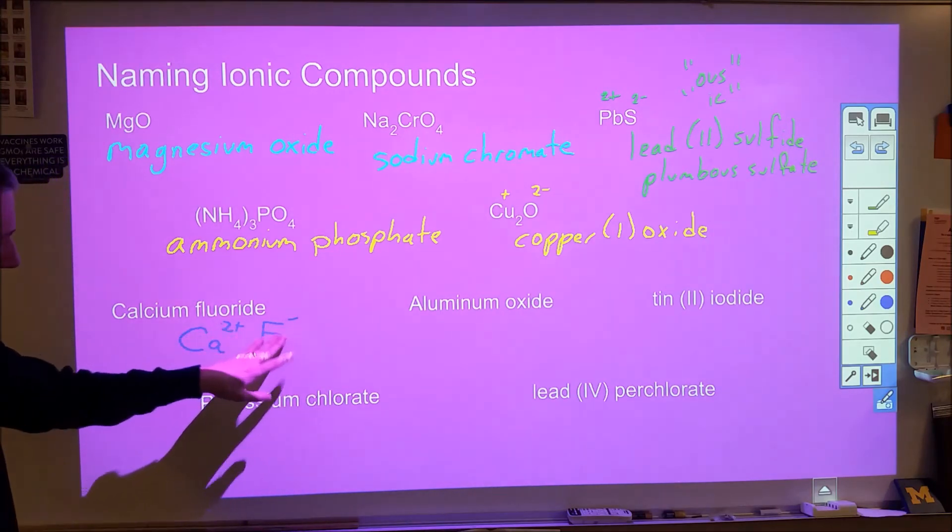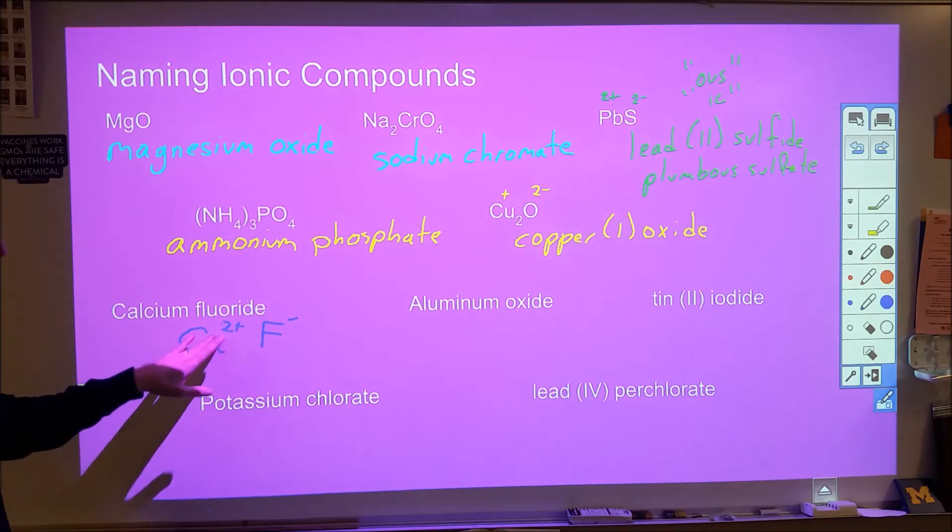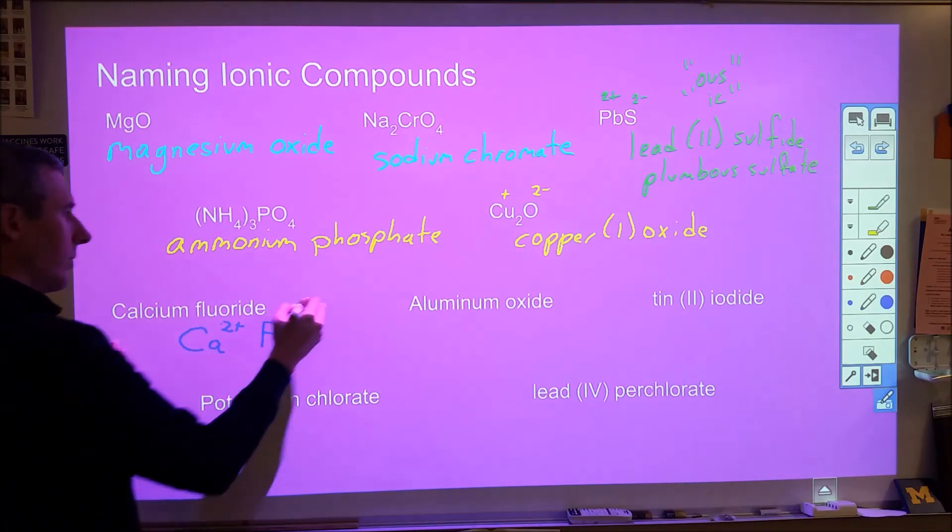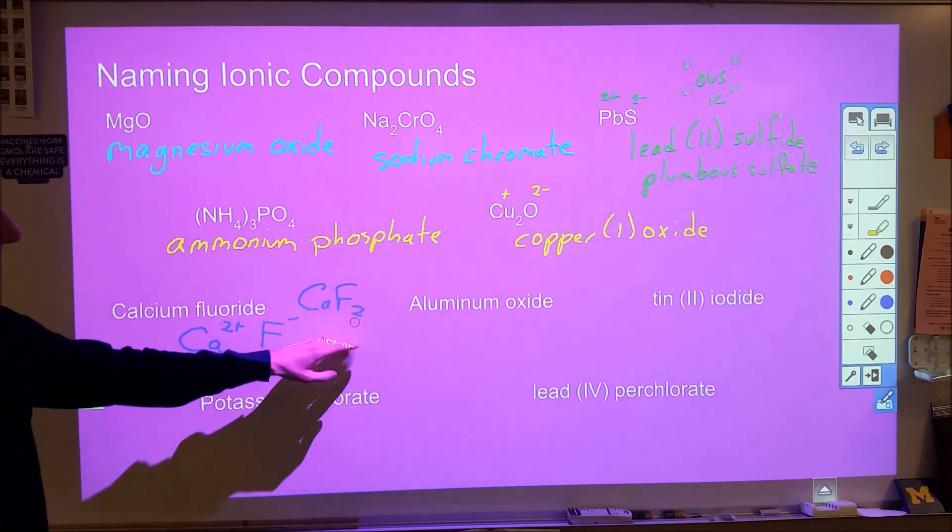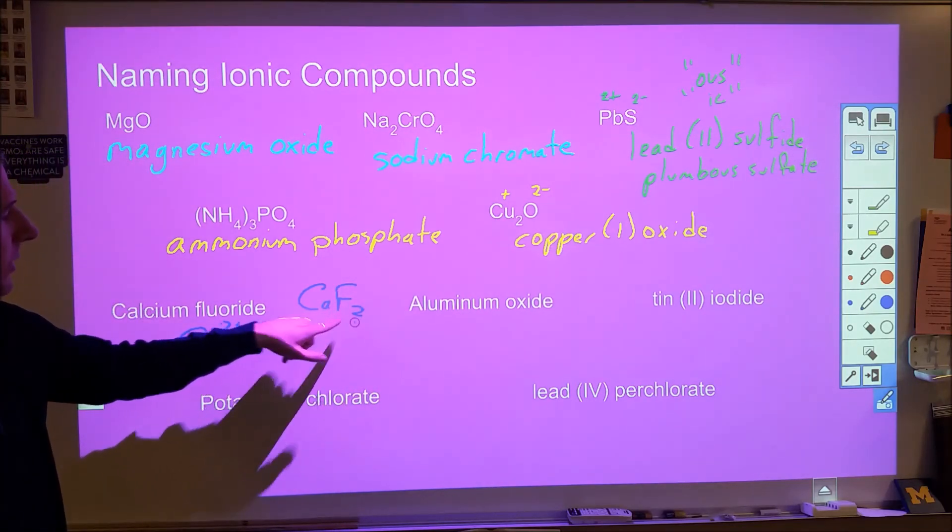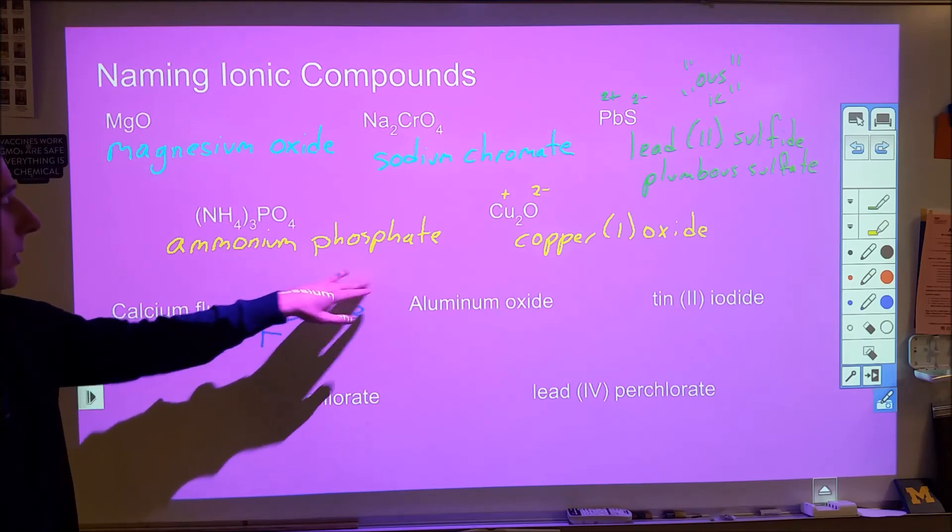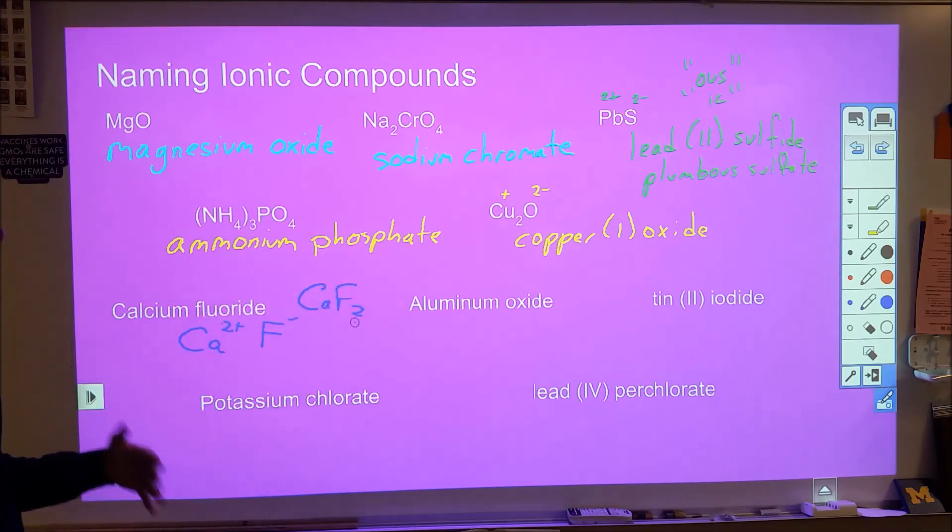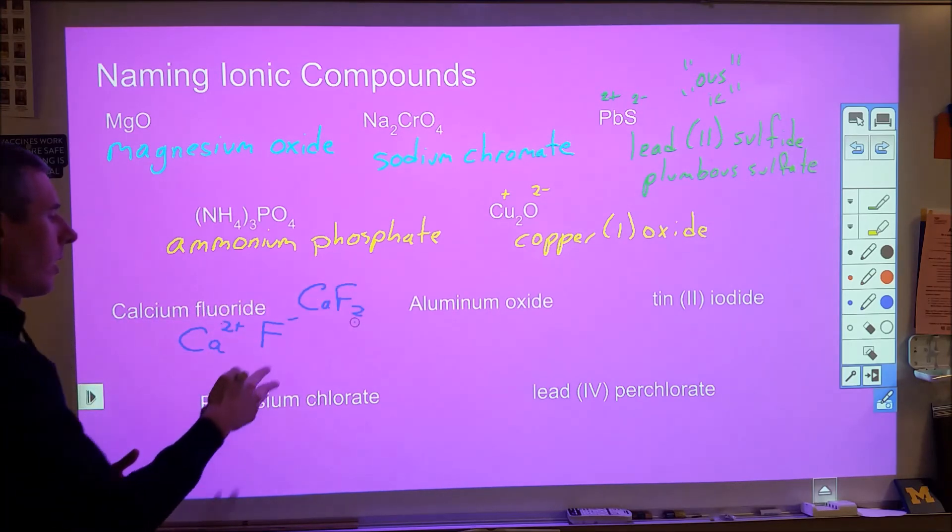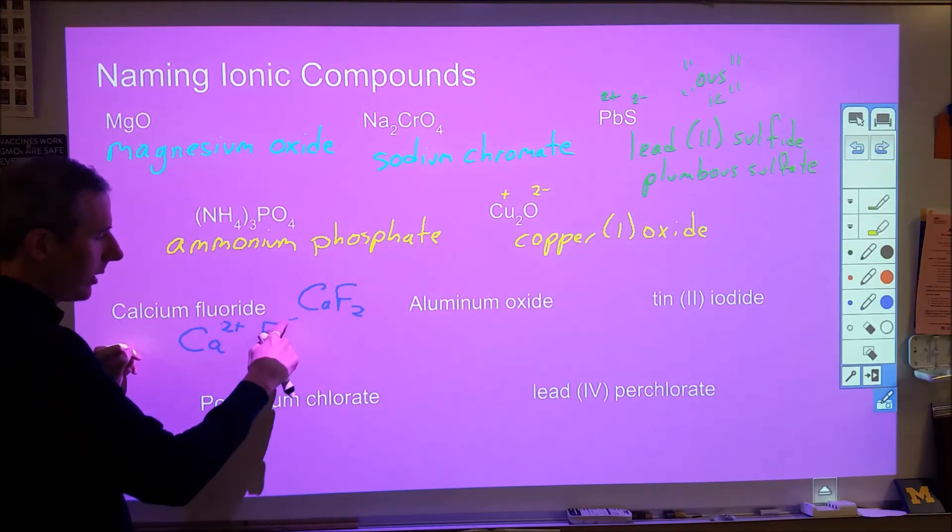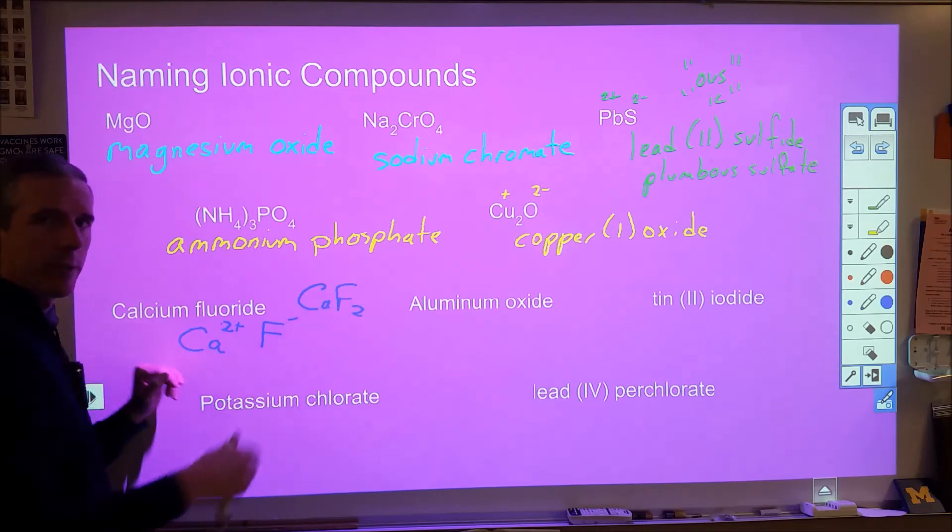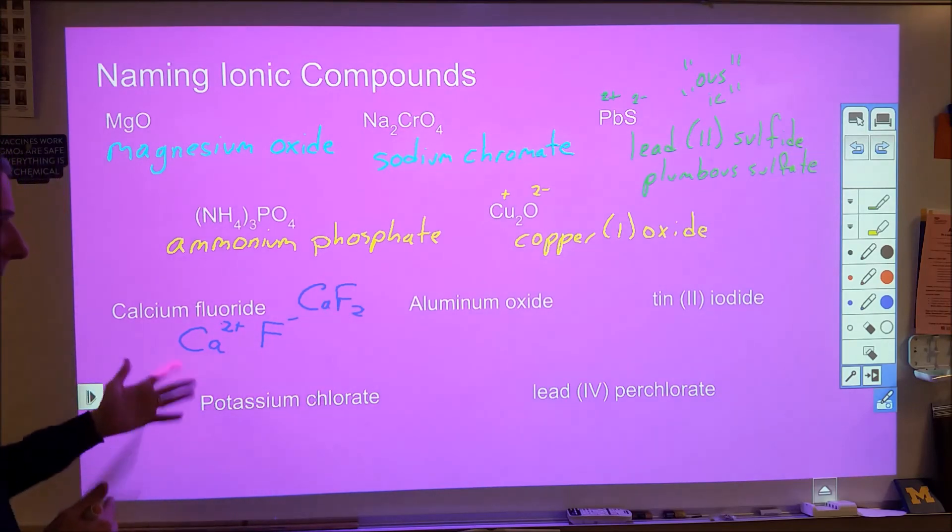So we're going to need two fluorides for every one calcium in order to get this to charge balance. So our formula is going to be CaF2. What we're saying there is that we have two F- for every one Ca2+. Now note that we don't put the charges in the final formula but they are still charged and then we got this from here and you can always take the number here and move it here and the number here and move it here and it will balance the charges you just might have to reduce them sometimes.